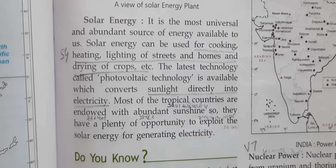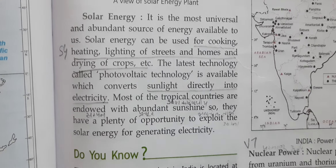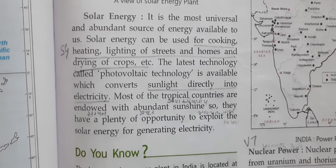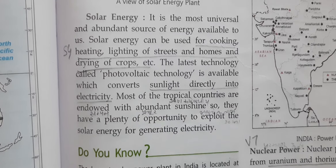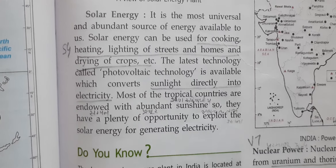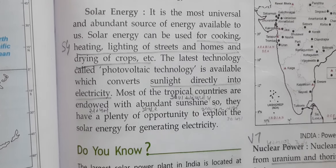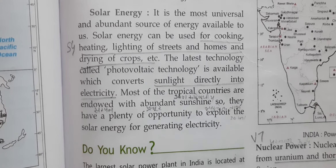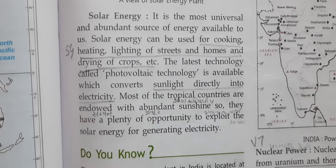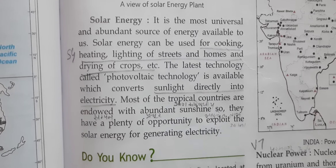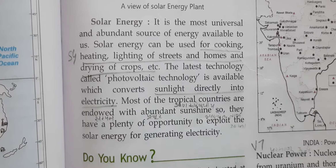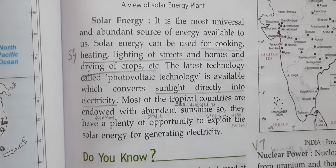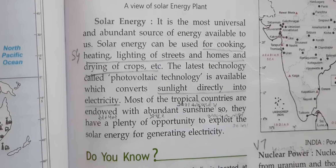Solar energy can be used for cooking, heating, lighting of streets and homes, and drying of crops, etc. The latest technology called photovoltaic technology converts sunlight directly into electricity. Most of the tropical countries are endowed with abundant sunshine, so they have plenty of opportunity to exploit solar energy for generating electricity.